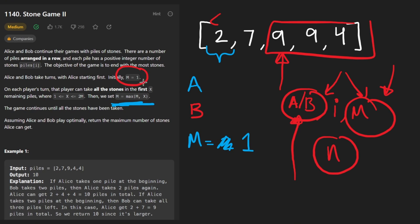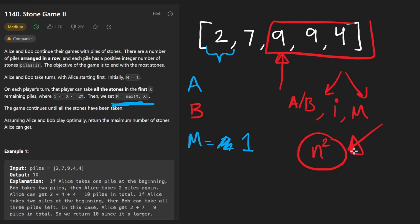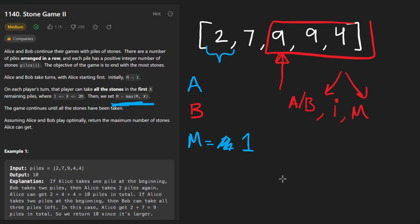We have three variables: the index, the m value, and whether we have Alice or Bob. The alice/bob flag probably won't affect time complexity much since there are only two choices. The index can be up to n values, where n is the length of the input array. For m, even though it starts at 1, in the worst case it could pretty much double on every level of the tree, getting as large as n. So the number of possible states is n squared - technically 2 times n squared including the flag. This hints that the problem can be solved with recursive dynamic programming, aka memoization.